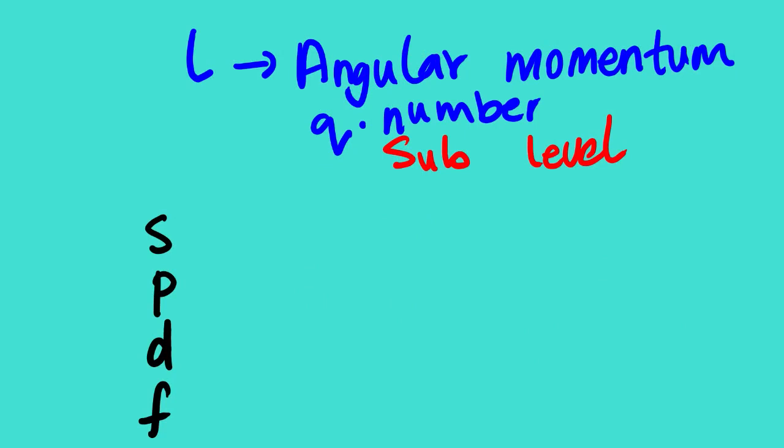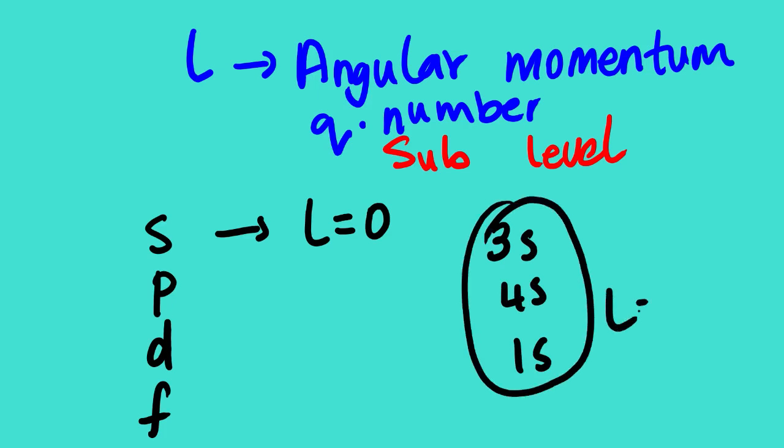The second quantum number is the angular momentum quantum number. It describes the sublevels. We have S, P, D, and F orbitals. All S orbitals have an angular momentum value of zero — it doesn't matter whether you have 3S, 4S, or 1S. The angular momentum for all S orbitals is zero.